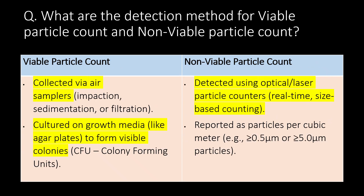What are the detection methods for Viable Particle Count and Non-Viable Particle Count? In the case of Viable Particle Count, a sample is collected via air sampler by impaction, sedimentation, or filtration method, then cultured on growth media like agar plates to form visible colonies, i.e. CFU — Colony Forming Units.